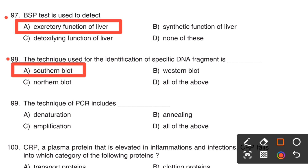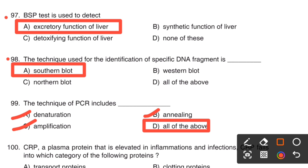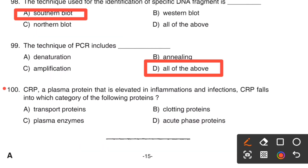Next question. The technique of PCR includes: Option A, Denaturation. Option B, Annealing. Option C, Amplification. Option D, All of the above. Denaturation, annealing, and amplification are the steps of PCR. So the right answer is Option D, All of the above.